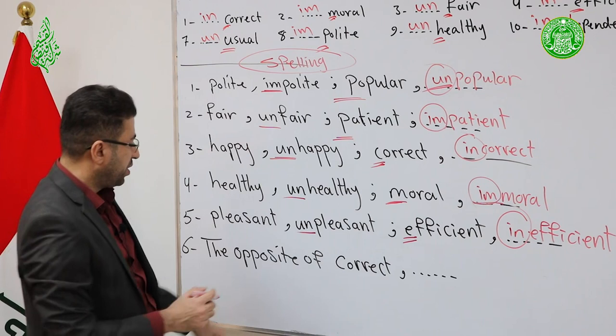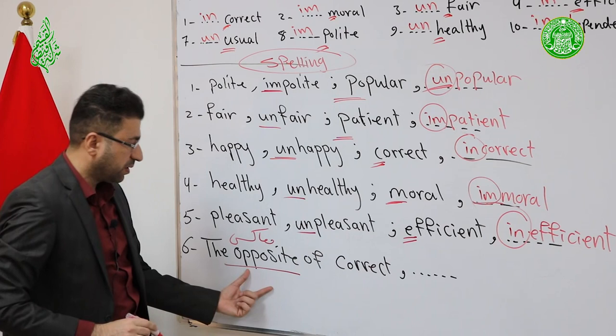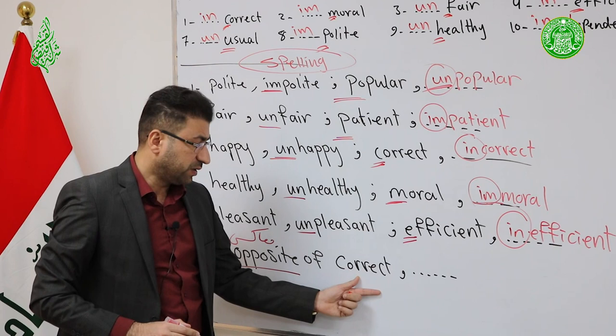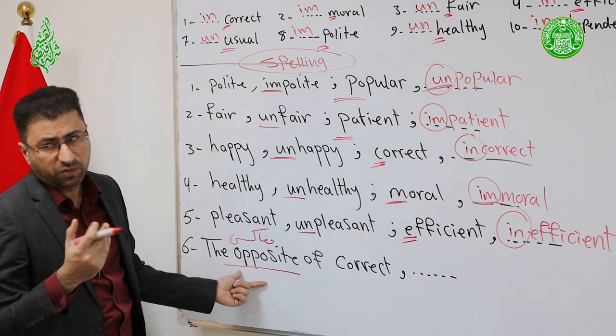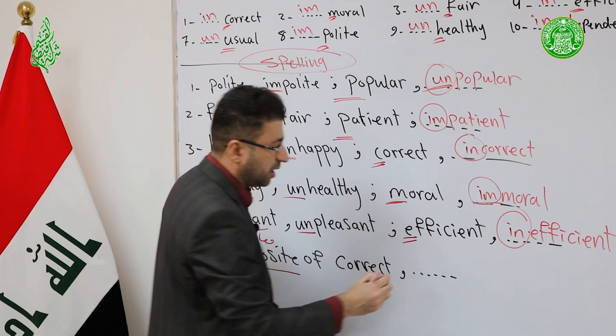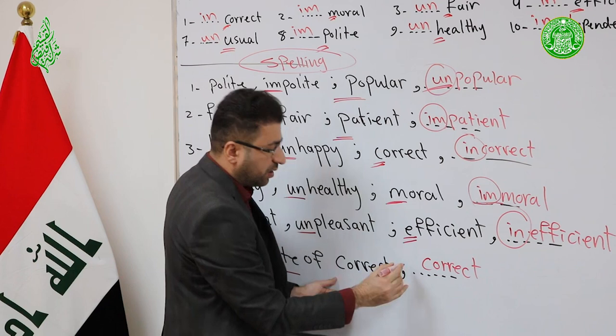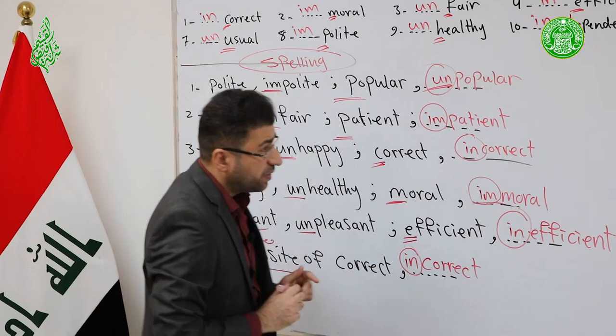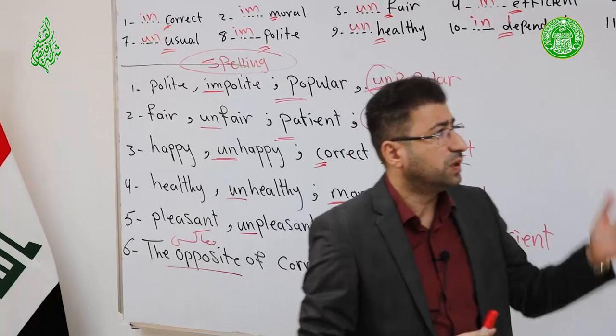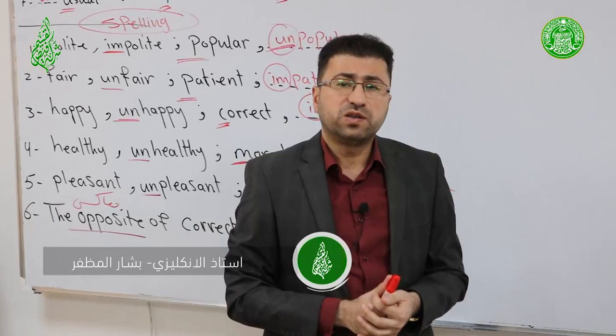The opposite — note that students must memorize the word 'opposite'. The opposite of Correct: write the word correctly, then apply the note — Correct starts with C, so add IN → Incorrect. This is everything about prefixes in Unit 1 Lesson 4. Thank you for watching my dear students — see you next lecture. Goodbye and be safe.